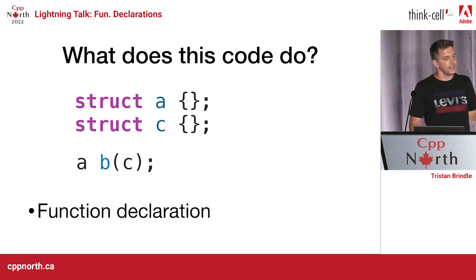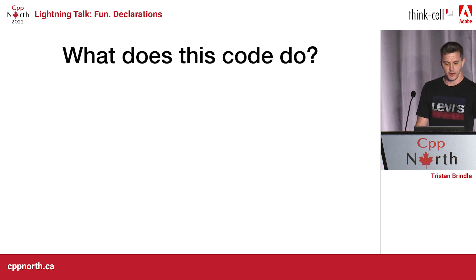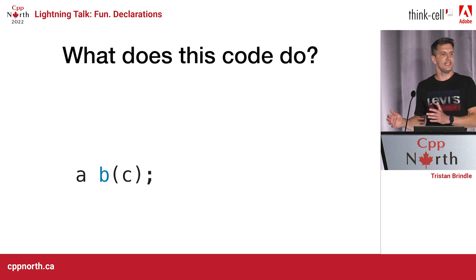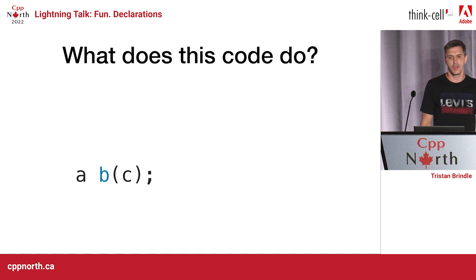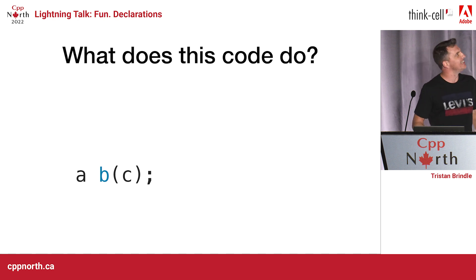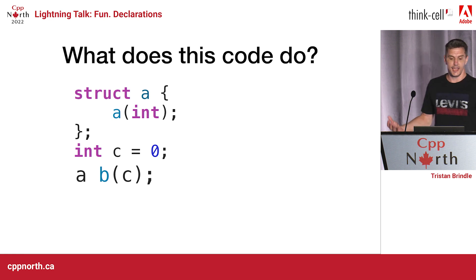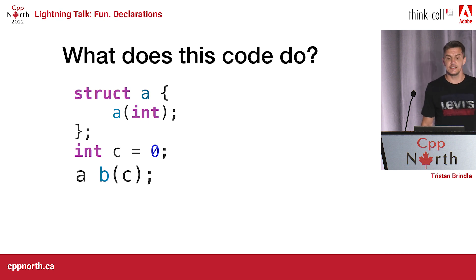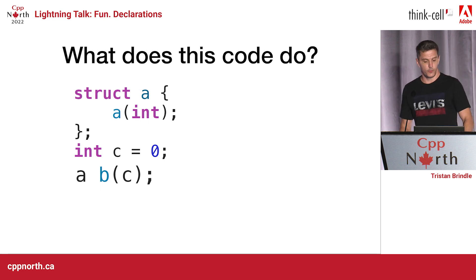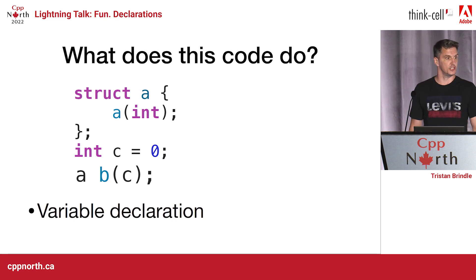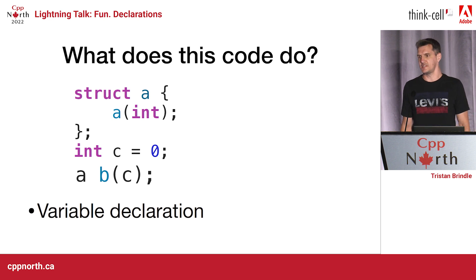The next one is a b paren c, but slightly different. With your years of experience using C++, you can look at this and know that this is of course a variable declaration: c is an int, a has a constructor taking an int, so we have a variable declaration — which, you know, obviously, right.